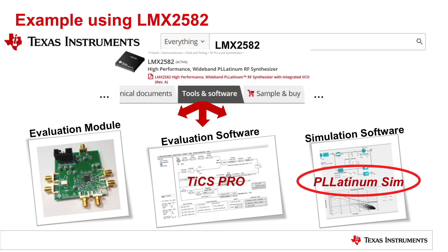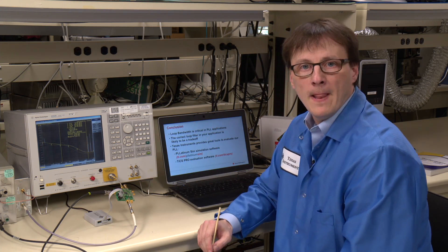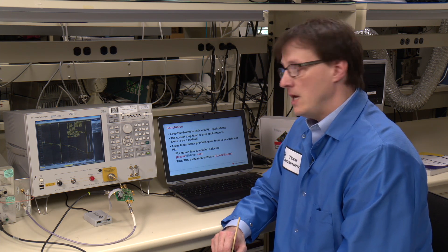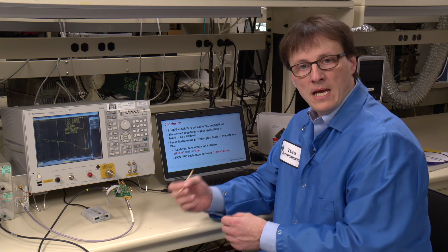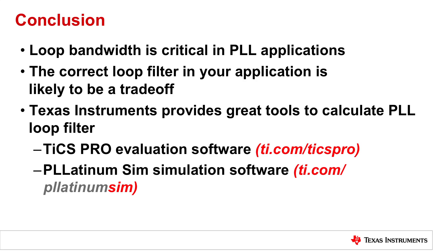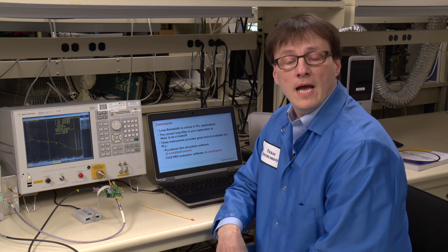Now to a conclusion. Loop bandwidth is having a critical impact on performance for your PLL. It is very likely that when you order your EVM, the loop filter that is installed on that EVM is not going to meet your performance requirement. It is also very likely that your design is going to be a trade-off. You have seen a few trade-offs in this video. There are many more, and you will see that you may like more of something and less of something else. Texas Instruments provides great tools to evaluate our PLL with the demonstrated Platinum Sim with the jitter optimizer, and finally we have TICS Pro evaluation software that helps you evaluate your device directly on the bench very easily. I hope you enjoyed this video. Thank you for watching and have a nice day.